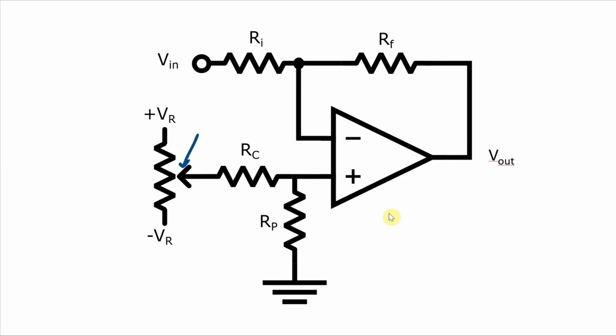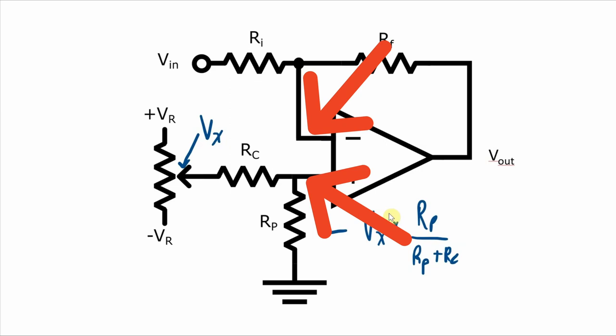Let's call the point here from the potentiometer VX. So that's going to be some value between plus VR and minus VR, depending on where you have the potentiometer dialed. And therefore the voltage at the non-inverting pin will be VX times RP over RP plus RC. And now what we have here is something that looks like the difference amplifier. The output voltage is going to be the difference between this voltage and this voltage. So in effect, what we're doing is adding this voltage to the circuit. So as long as we've got your VX dialed to the right value, it will compensate for the input offset voltage.